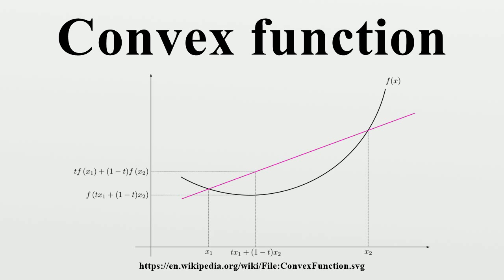If f is convex in x, then the supremum over some parameter is convex in x, even if the constraint set is not convex. If f is convex, then its perspective function is also convex. The additive inverse of a convex function is a concave function. If f is a convex real-valued function, then for a countable collection of real numbers, certain related constructions preserve convexity.